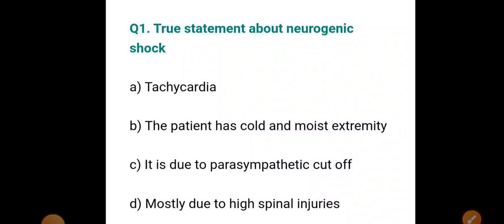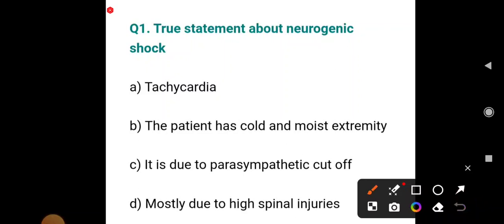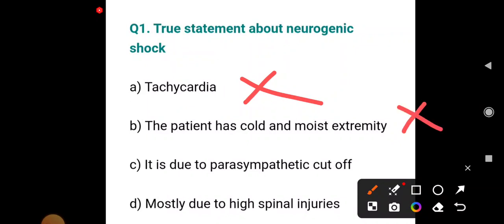All options are in front of you — try to answer in the comment section. You have to know all other options are not the answer, as they are asking for the true statement. In most shocks we find tachycardia, but in neurogenic shock we find bradycardia — tachycardia is ruled out. In most shocks there is cold and moist extremity, but in neurogenic shock we have hot extremities.